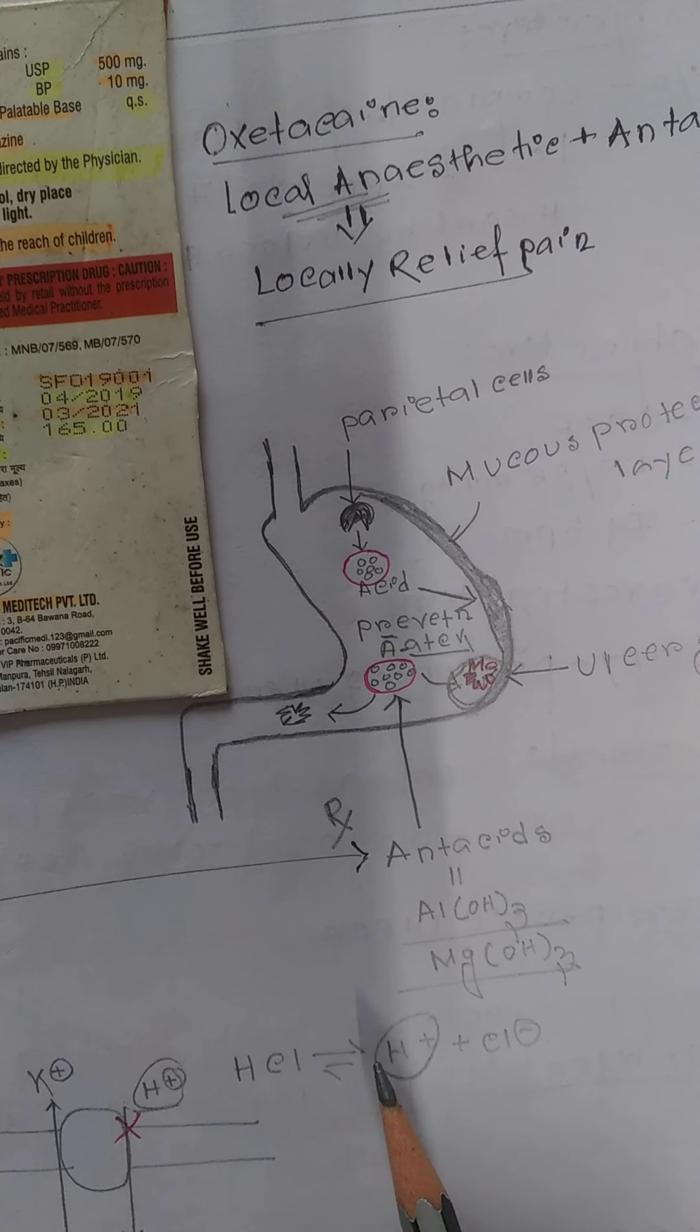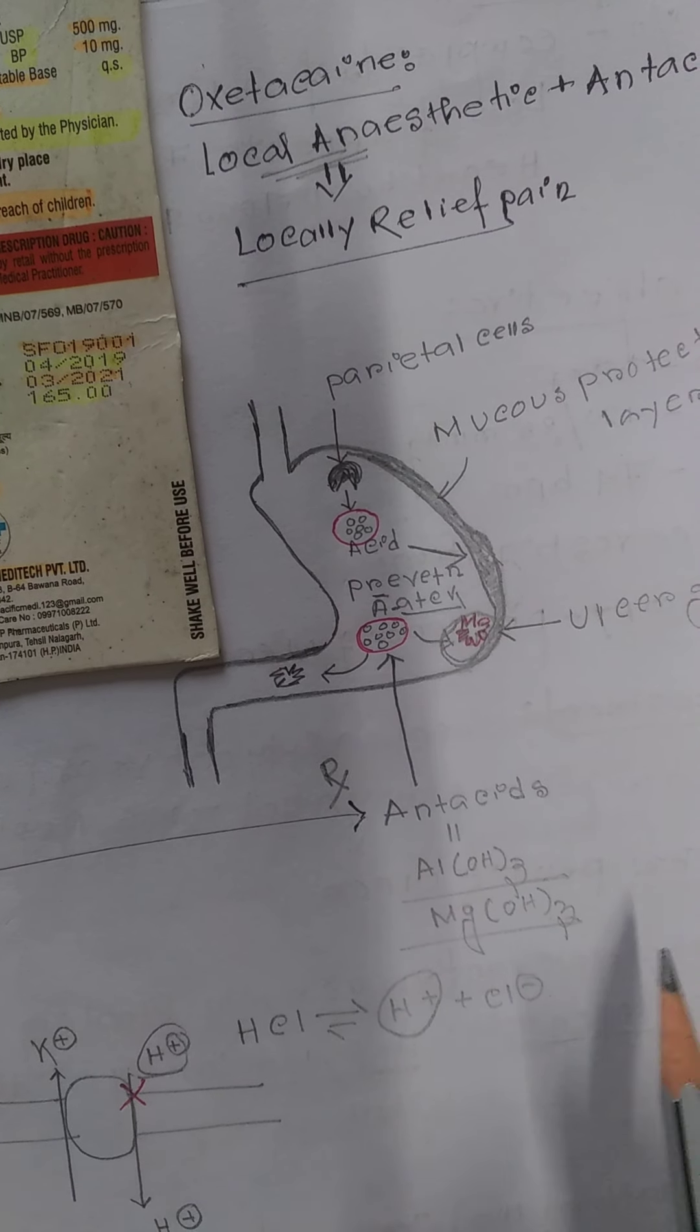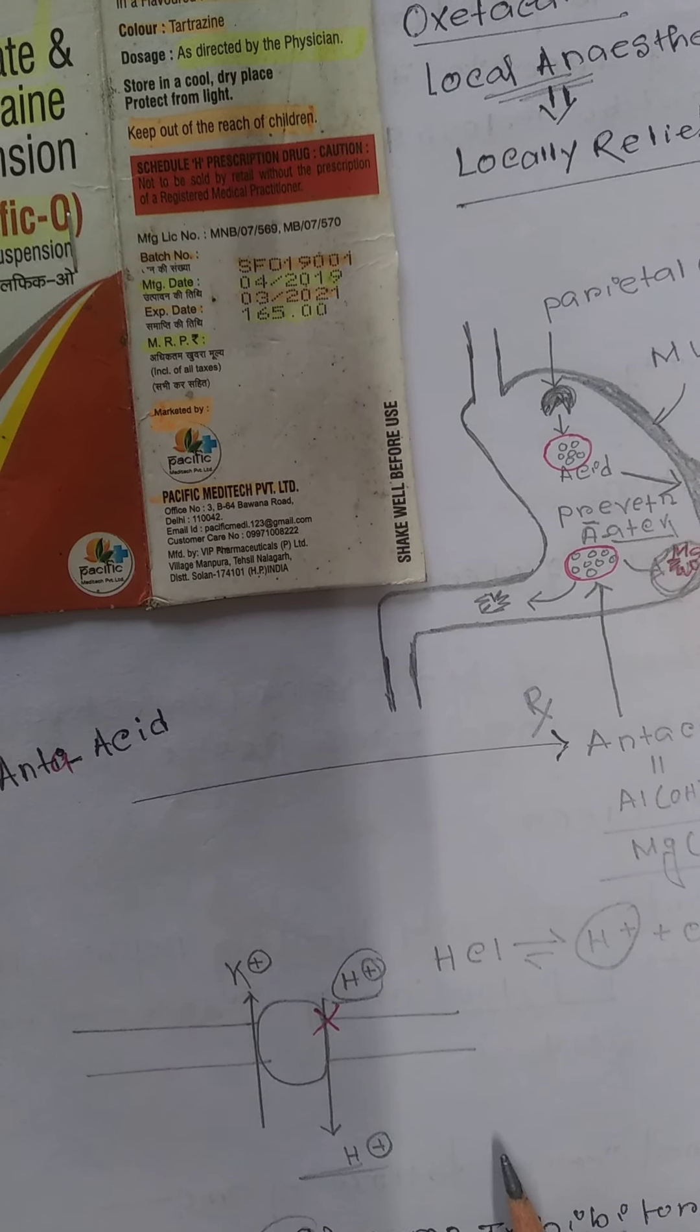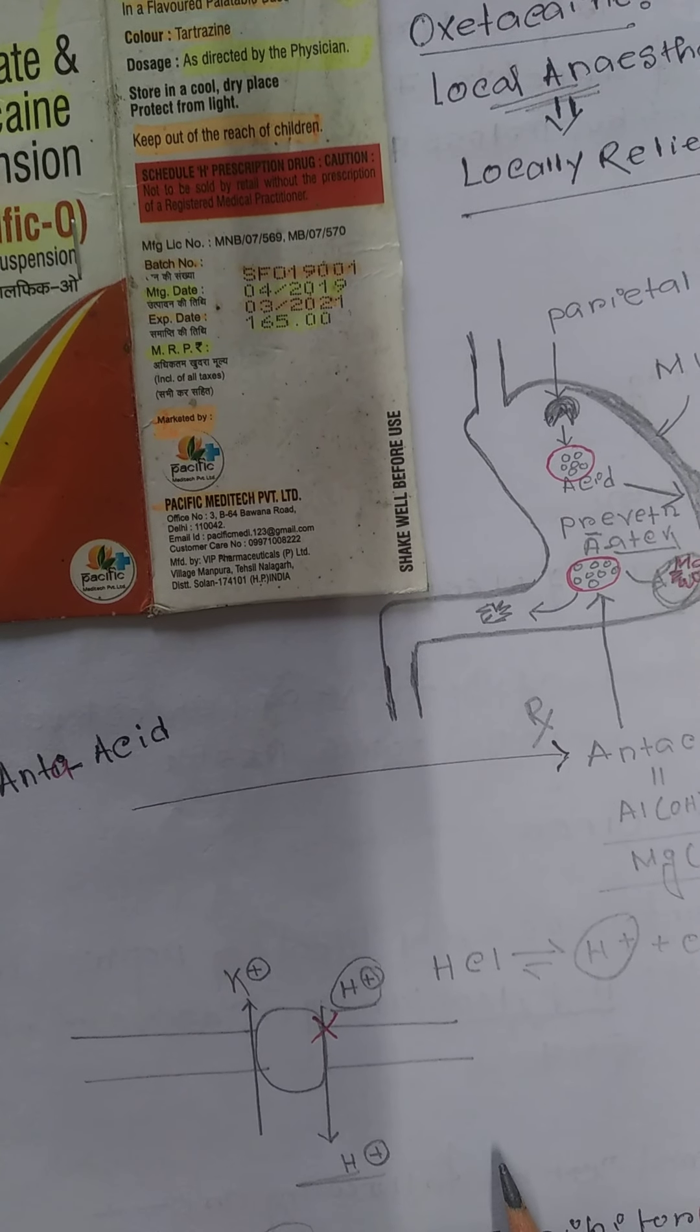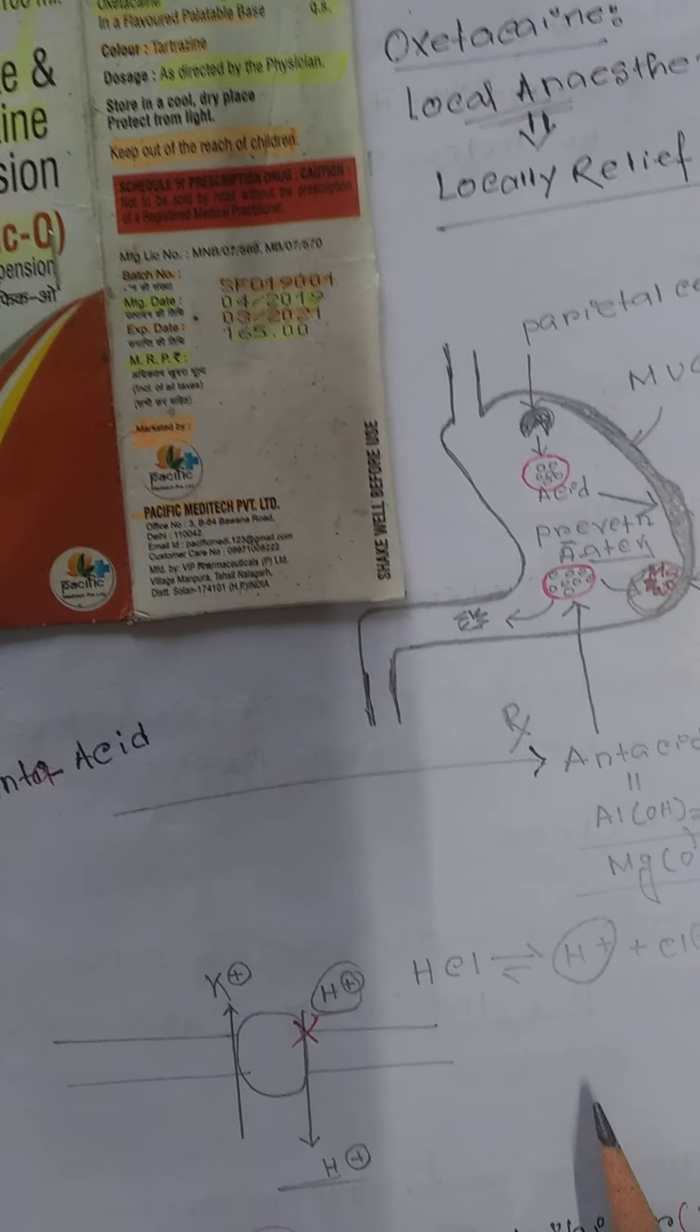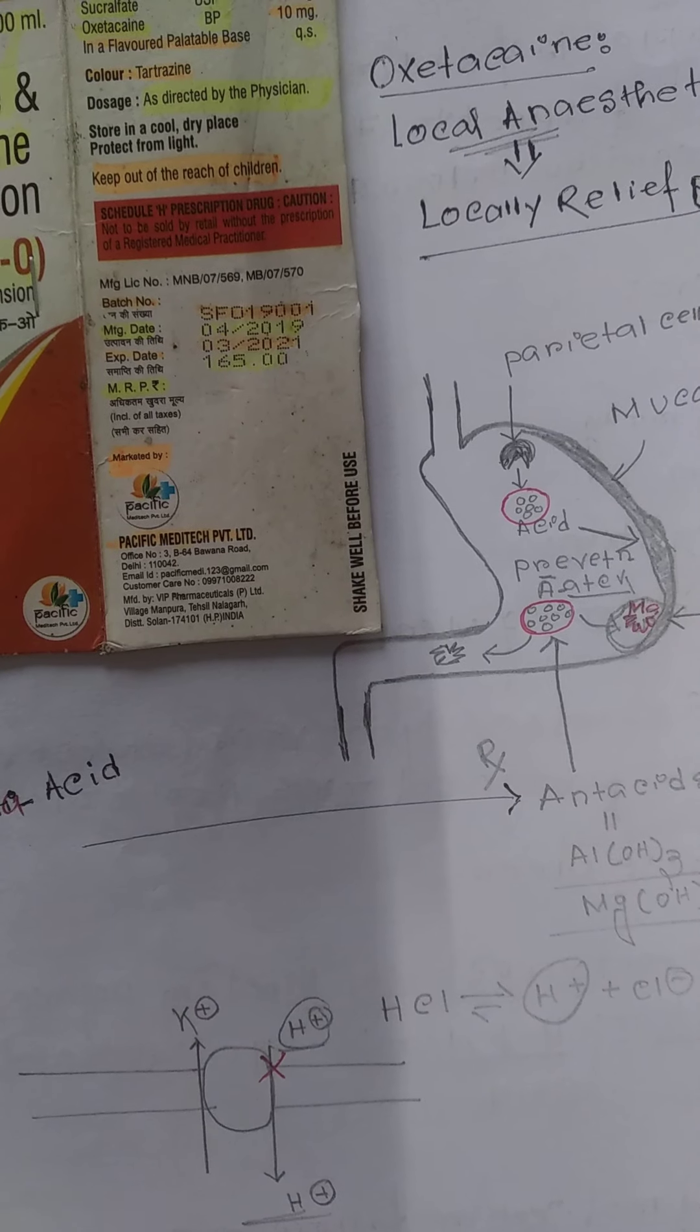Along with this, we can take antacids like aluminum hydroxide and magnesium hydroxide. Our parietal cells release HCL that breaks down into H+ and Cl-. H+ is otherwise called proton.